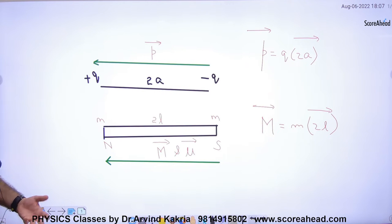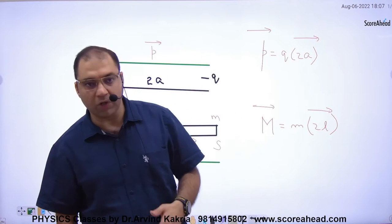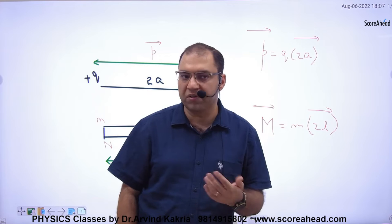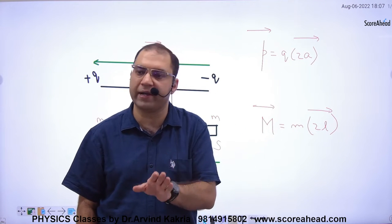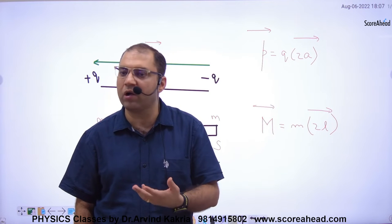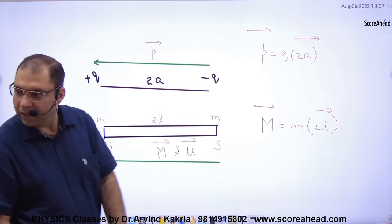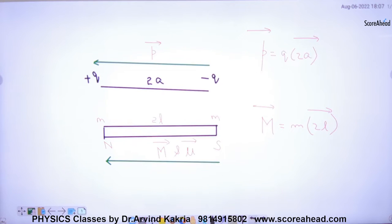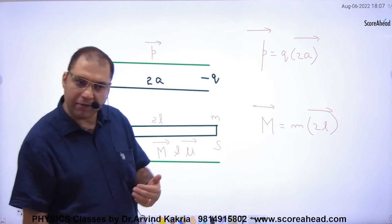Iska matlab, agar jahan par bhi magnetic field hai, jahan par poles hai north and south, equal and opposite poles, M and M, separated by a very small distance, usko kya bolte hai magnetic dipole. Or jo bhi magnetic dipole hai, uska kya hoga, magnetic dipole moment. Yeh pehla point hai. Dusra point, ab hum kisko study karne ja rahe hai, bar magnet ko.